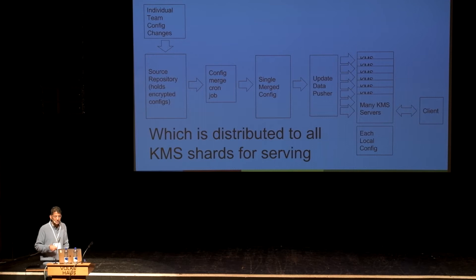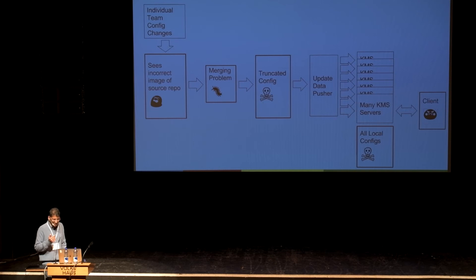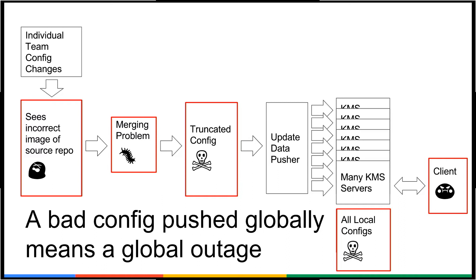I think you can see where this is going. Some latent timing issue tickled a bug in the merging code that had been latent for a couple of years. The bad, truncated config got pushed globally. Nobody had their keys, and a lot of the systems went down.